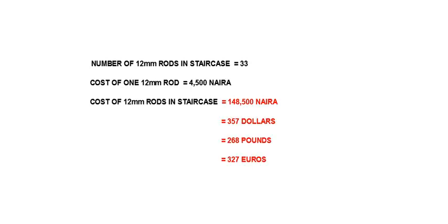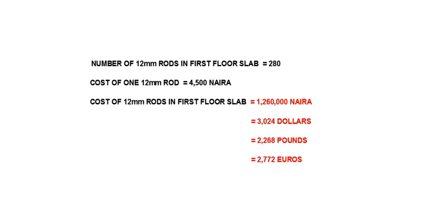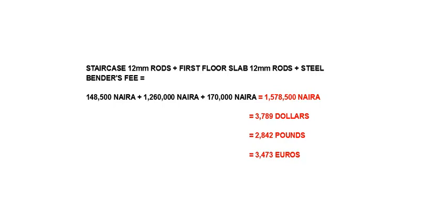Reinforcement for the staircase and first floor slab is next. 12 mm rods for the staircase will cost 148,500 Naira, approximately 357 dollars, 268 pounds or 327 euros. 12 mm rods for the first floor slab will cost 1,260,000 Naira, approximately 3,024 dollars, 2,268 pounds or 2,772 euros. The total cost of reinforcement in the staircase and first floor slab together is 1,578,500 Naira, approximately 3,789 dollars, 2,842 pounds or 3,473 euros.